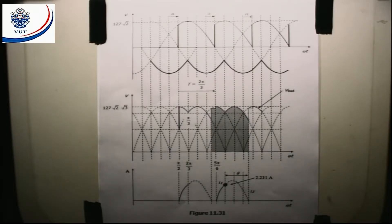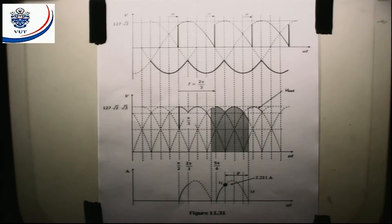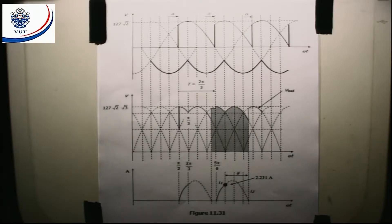That is in figure 11.29. The supply transformer has a phase voltage of 127 volts, 50 hertz. The motor parameters are: the inductance is 12 millihenries, the resistance is 0.72 ohm, the armature constant is 2 volts per radians per second, and the torque constant is 2 newton meters per amp.